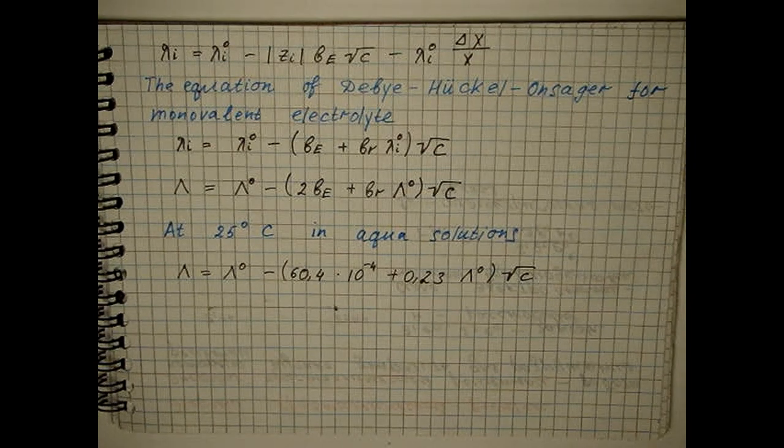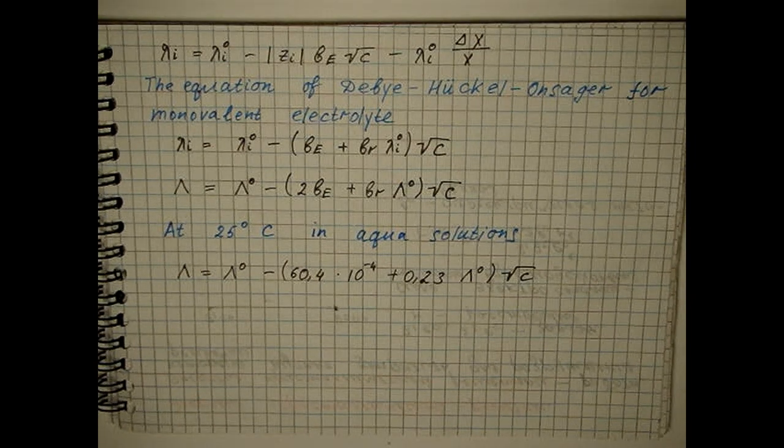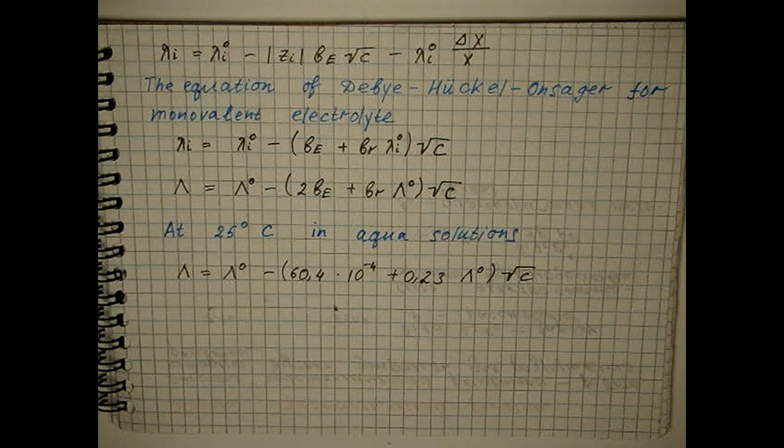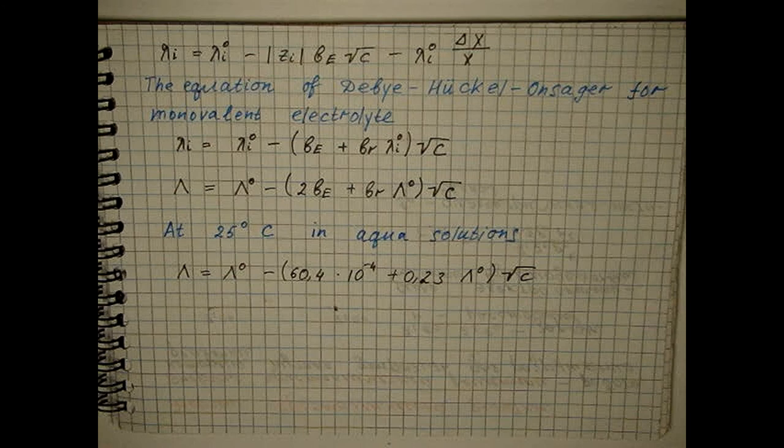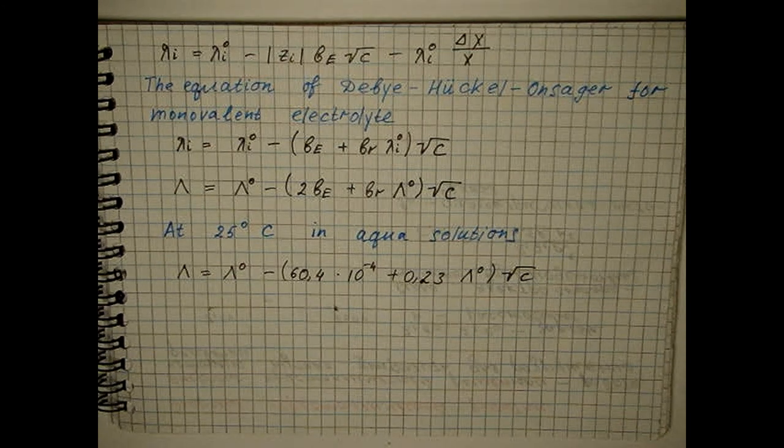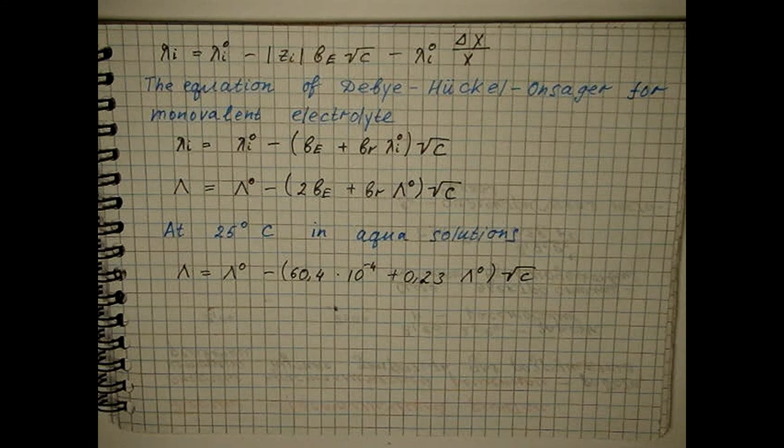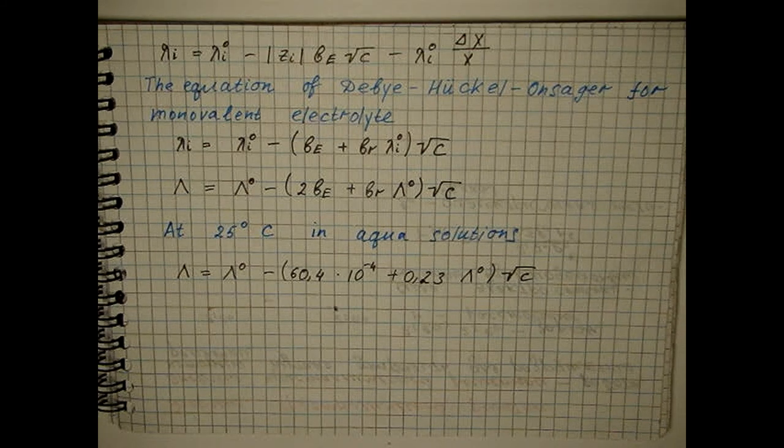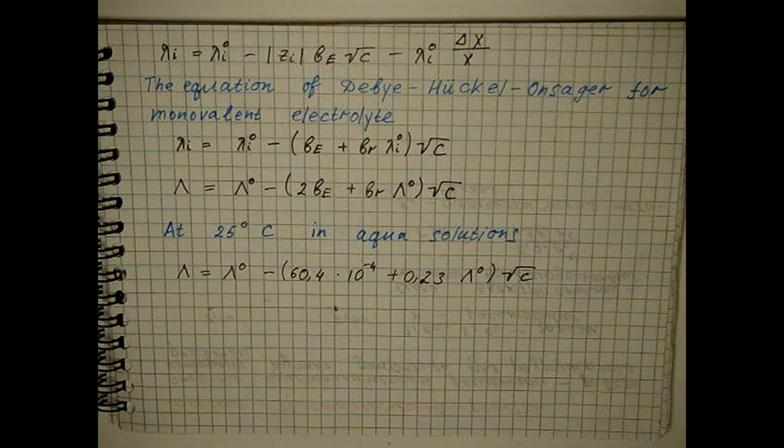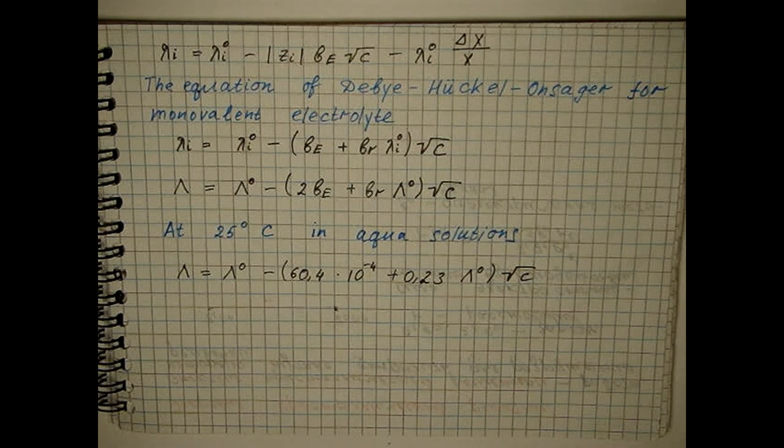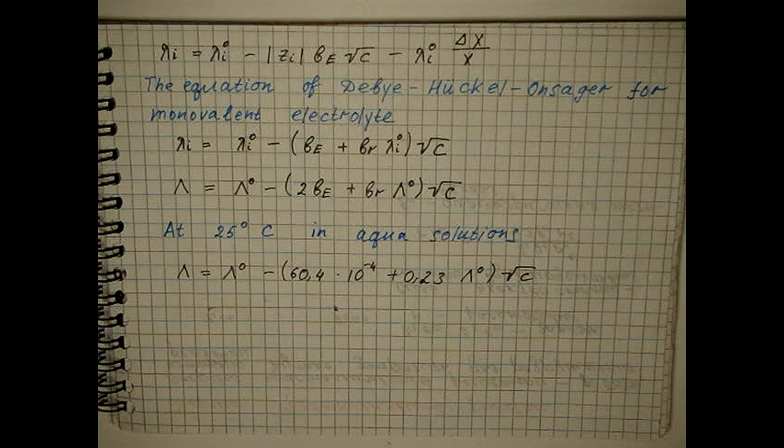the electrophoretic effect accounts for approximately two-thirds of the total decrease in electrical conductivity due to ion-ion interaction, while the relaxation effect accounts for one-third. To fulfill the obtained equation, even larger dilutions are required than for the Debye Heukel-Limit law. This is due to additional assumptions made when deriving the relationships for the electrophoretic and relaxation effects.